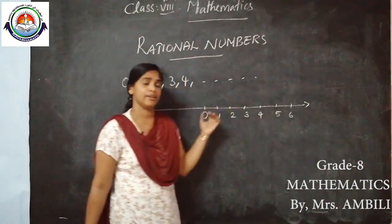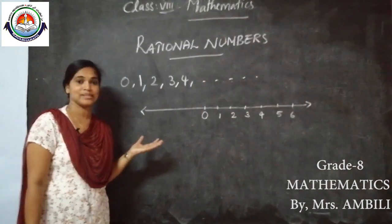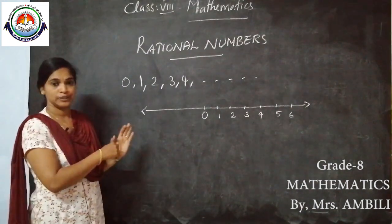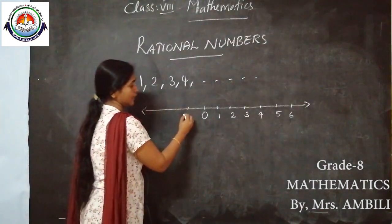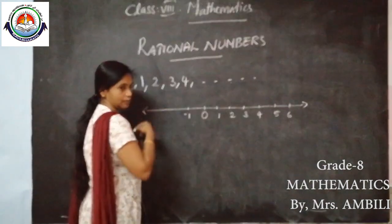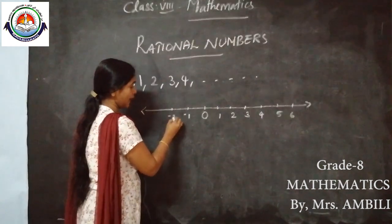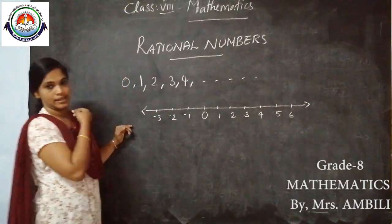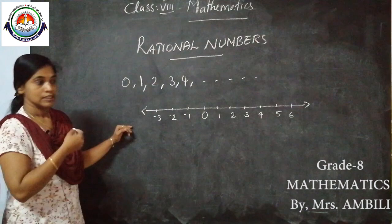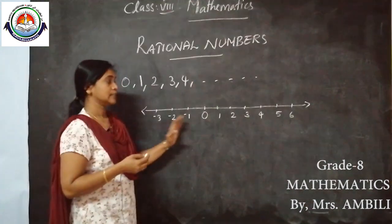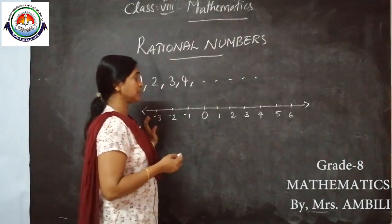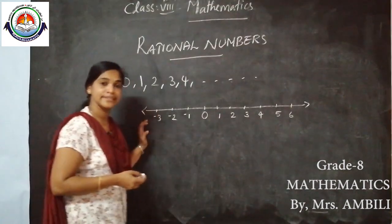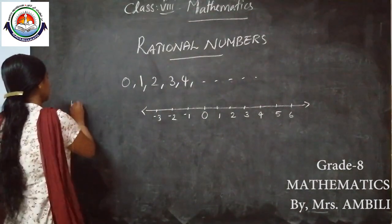Then what is the left part of 0? That also you studied — these are negative numbers. So we can represent here: minus 1, minus 2, minus 3, etc. Including these negative and positive numbers is known as integers.